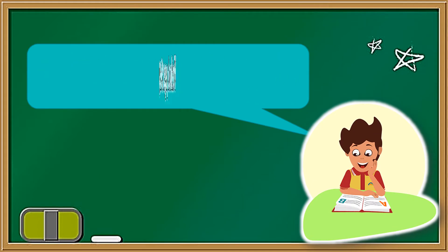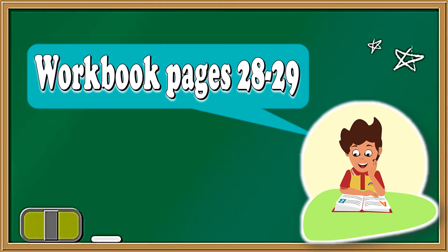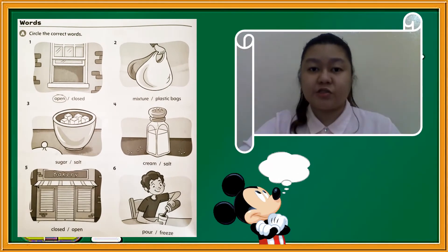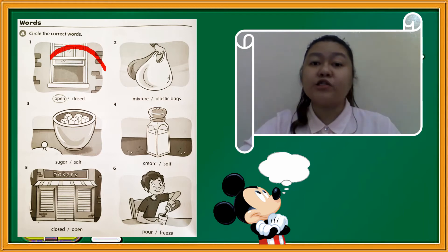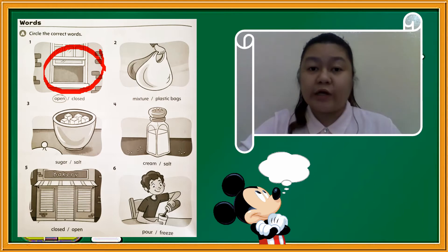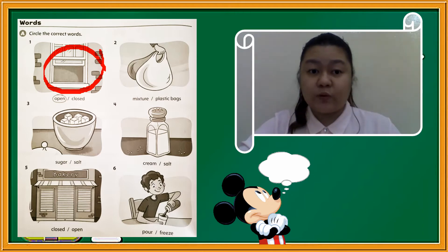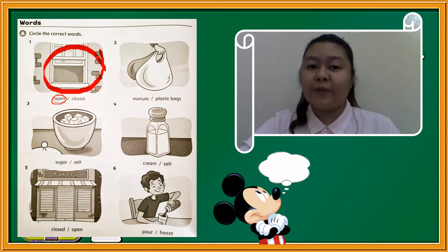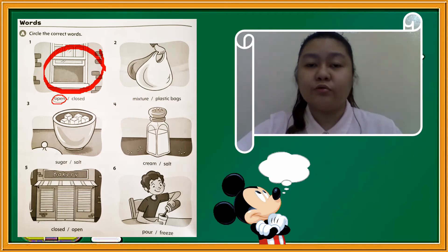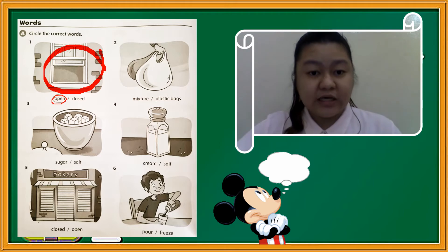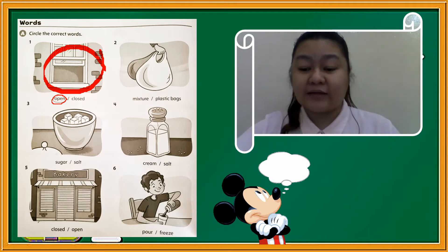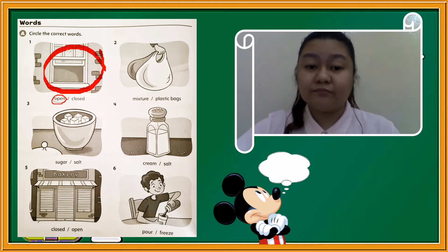Proceed with your workbook, pages 28 and 29. On your workbook, page 28, letter A — circle the correct words. Look at the picture and encircle the word that describes it. For example, number 1: look at the picture — is the window open or closed? The answer is open, so you encircle the word open. How about number 2? What is the name of that object — is it a mixture or plastic bags? The answer is plastic bags. Correct.